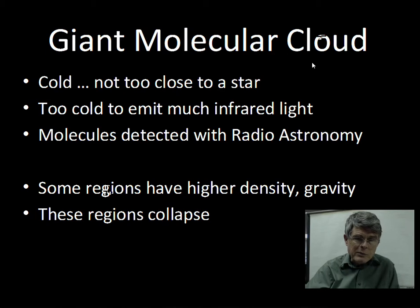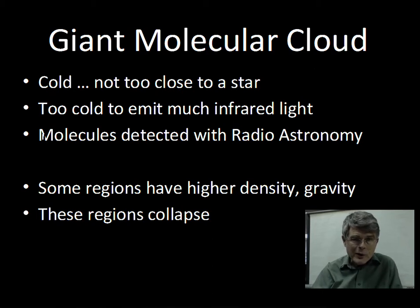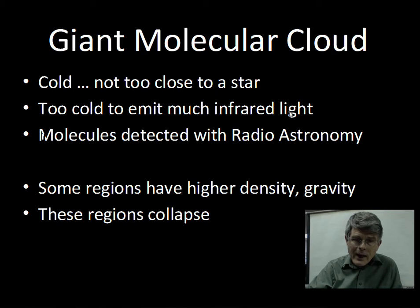We start in space with a giant molecular cloud — a very large gas cloud, bigger than our solar system. Out of this cloud, hundreds or thousands of stars can form; there's that much material and mass. In this giant molecular cloud, it's cold — not close to a star, not receiving energy, very cold.